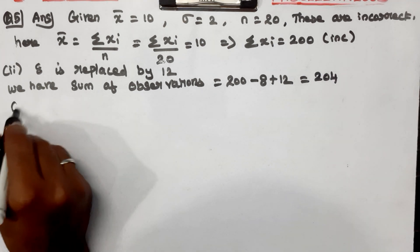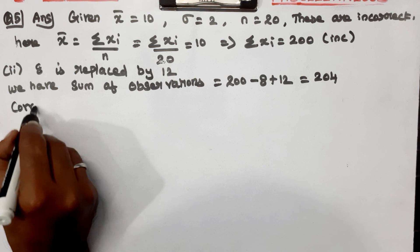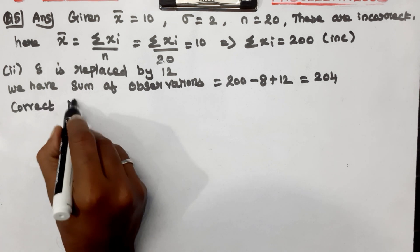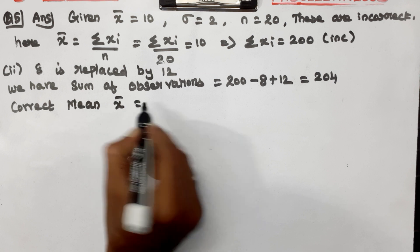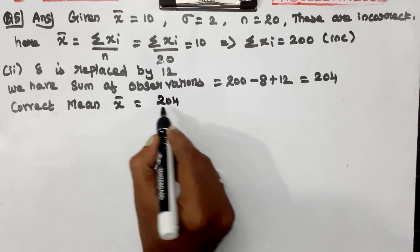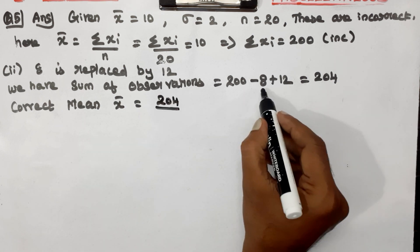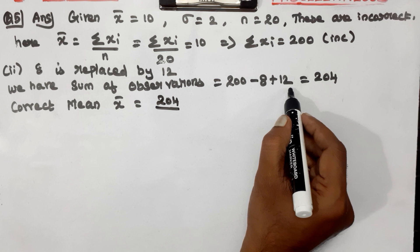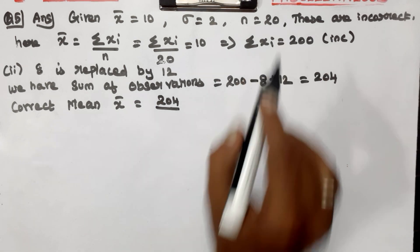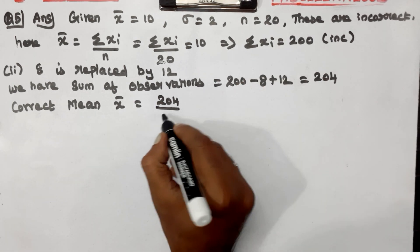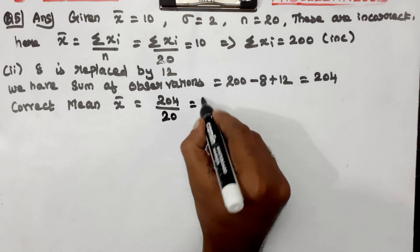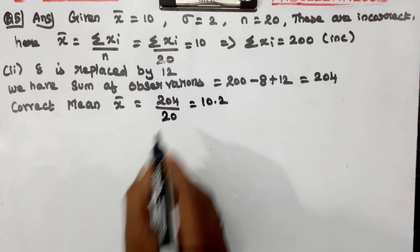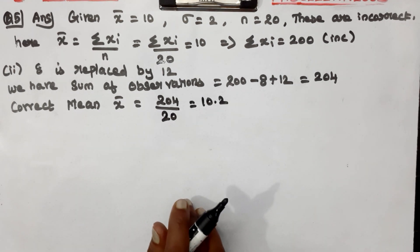This is the correct mean. Correct mean x-bar = 204 divided by n = 204 / 20 = 10.2. So the correct mean x-bar is 10.2.